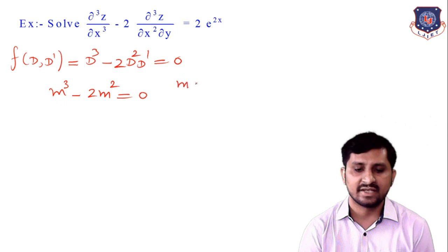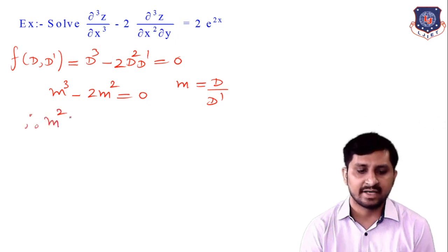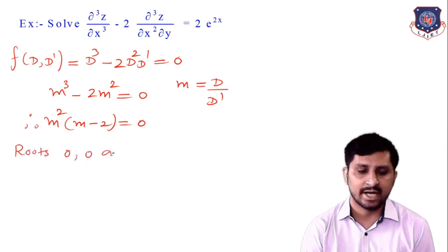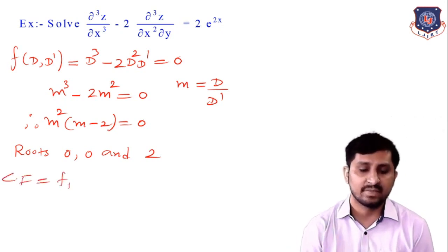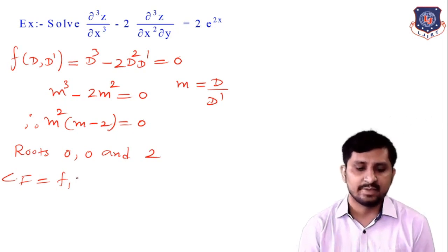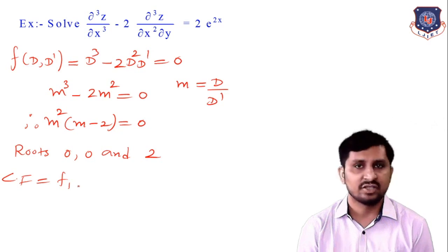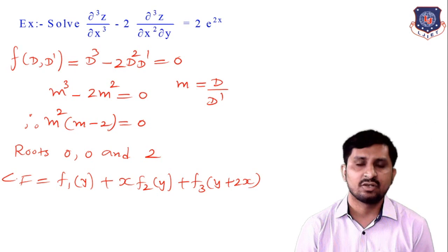This factors as m²(m - 2) = 0, so the roots are 0, 0, and 2. Since 0 is a repeated root, the complementary function is f₁(y + 0·x) + x·f₂(y + 0·x) + f₃(y + 2x), which simplifies to f₁(y) + x·f₂(y) + f₃(y + 2x). This is our complementary function.